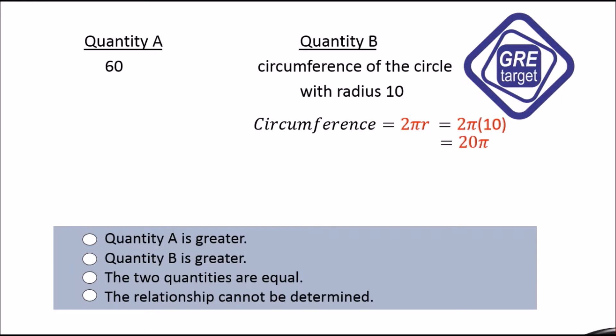We get 20π. Pi value is 3.14, so we will replace it. But we will not go this way. We will get 20 times 3 plus something.